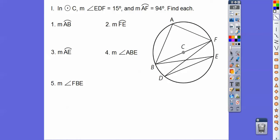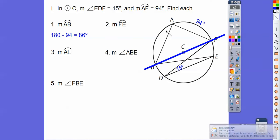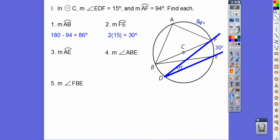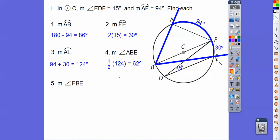For the next problem: angle EDF is 15 degrees and arc AF is 94 degrees. Arc AB is the rest of the semicircle: 180 minus 94 equals 86. Arc FE: since EDF is an inscribed angle, doubling 15 gives arc FE equal to 30 degrees. Arc AE is 94 plus 30, which equals 124. Angle ABE is an inscribed angle, so it's half of 124, giving 62 degrees. Finally, angle FBE is also an inscribed angle intercepting arc FE, so it equals 15 degrees.